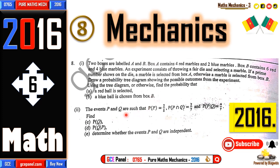The events P and Q are such that the probability of P equals two on five, the probability of P intersection Q equals two on seven, and the probability of P given Q equals four on seven. Find: (c) the probability of Q, (d) the probability of Q given P, and (e) determine whether the events P and Q are independent.